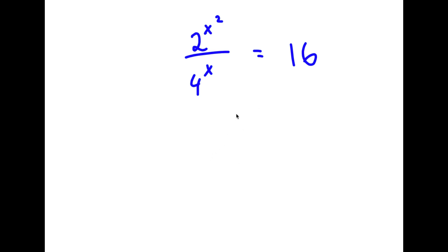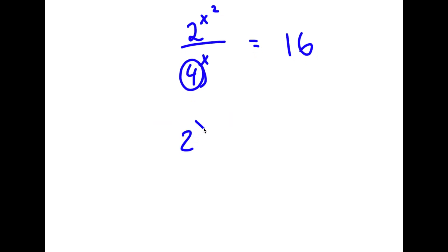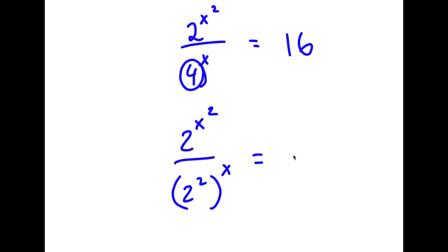In this problem, I have 2 to the power of x squared over 4 to the power of x is equal to 16. What I'm first going to do is rewrite 4 as 2 squared. So now I have 2 to the power of x squared over 2 squared to the power of x is equal to 16, which I'll rewrite as 2 to the power of 4.